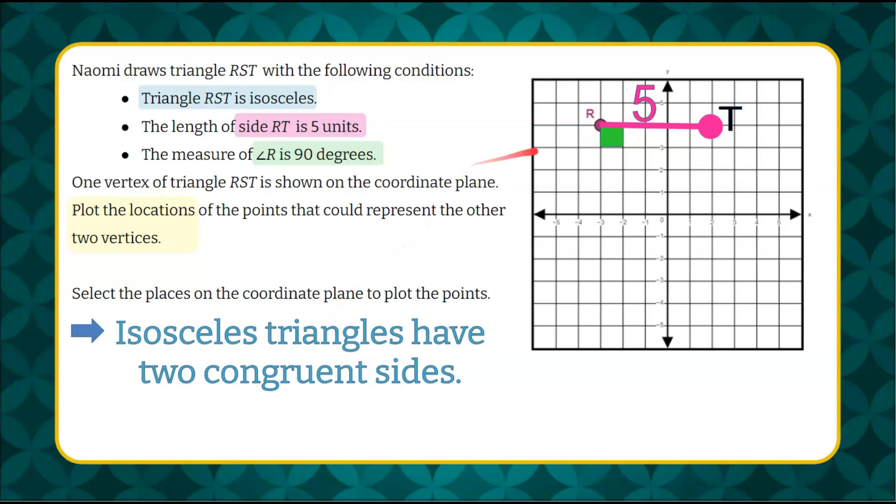So I know that I can now draw another segment to form another side 5 units in length and plot a point. So I'm going to call that S because it's triangle RST. Triangle RS, let's connect S and T to form that third side.